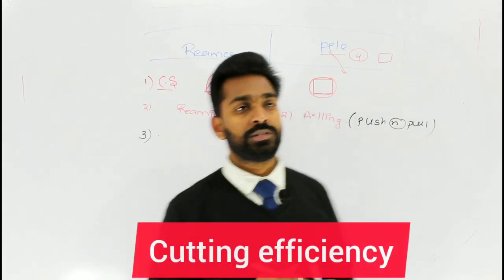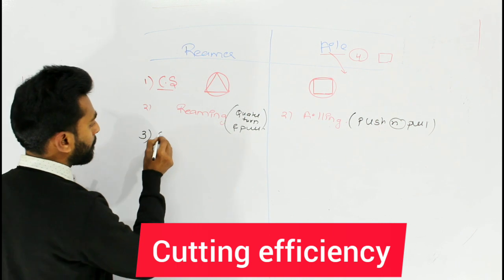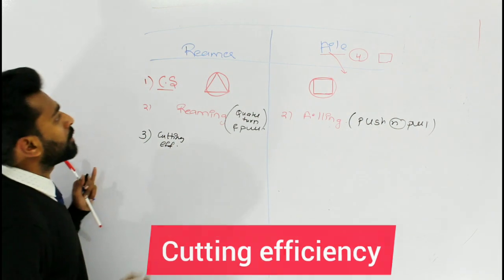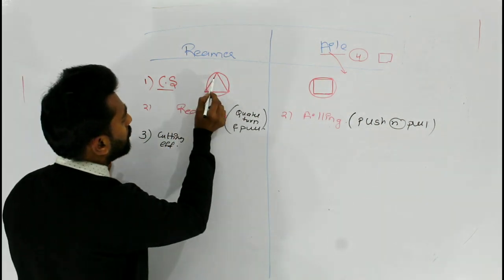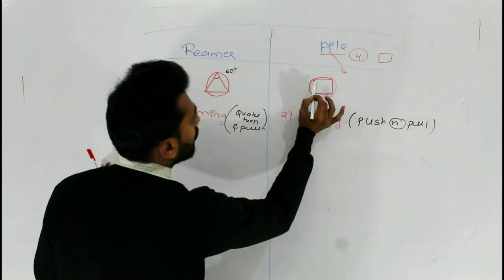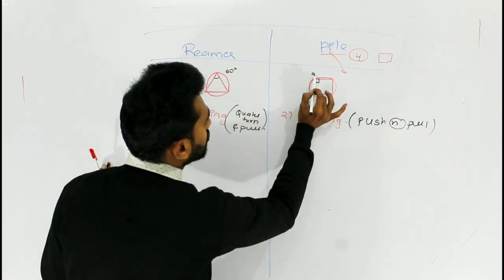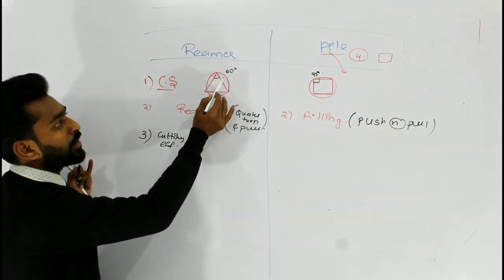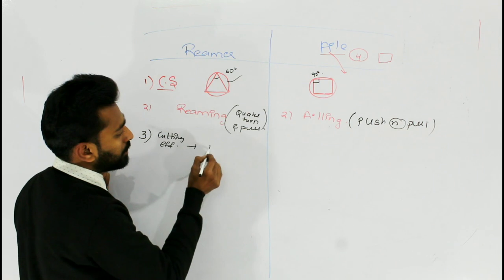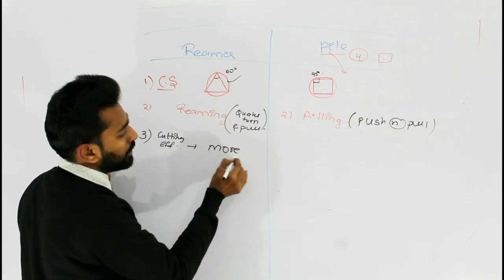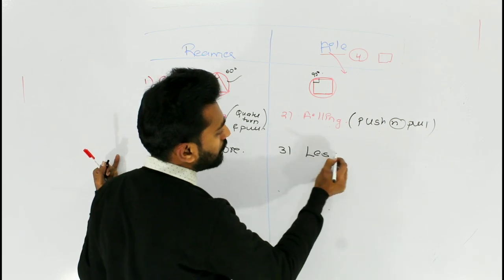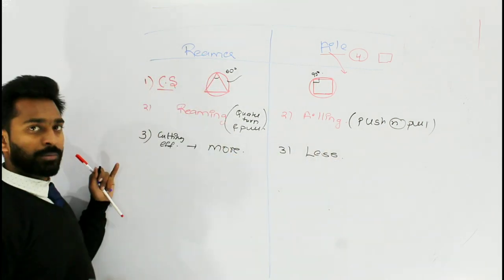Coming to the cutting efficiency: if you observe the cross section of the reamer, it has an acute angle, while the file has a 90-degree angle. Since the reamer has an acute angle, it has more cutting efficiency. Cutting efficiency is more in the reamer when compared to the file, and the file has less cutting efficiency when compared to a reamer.